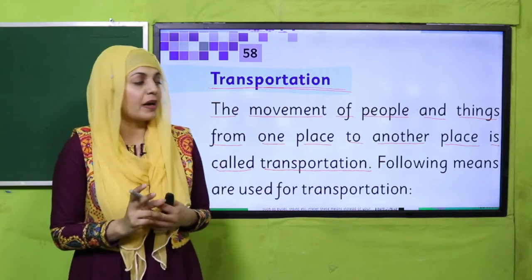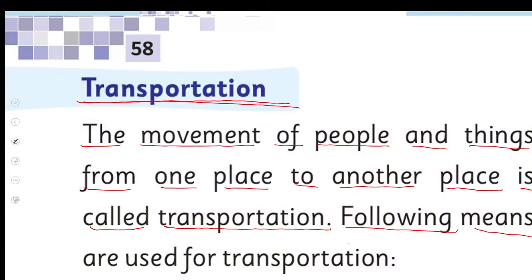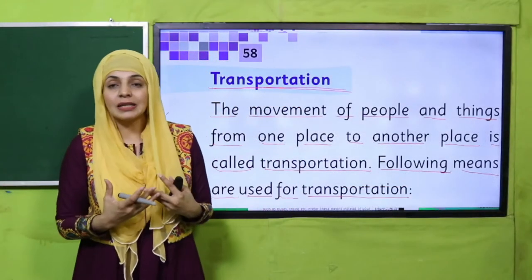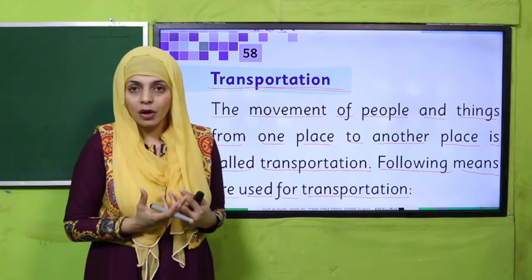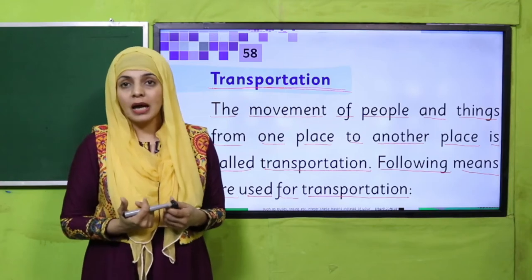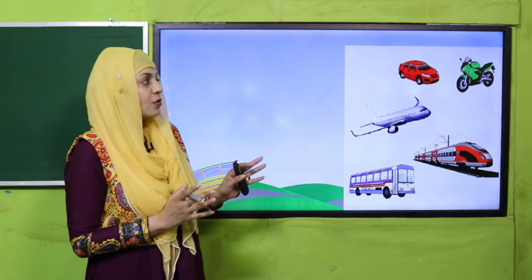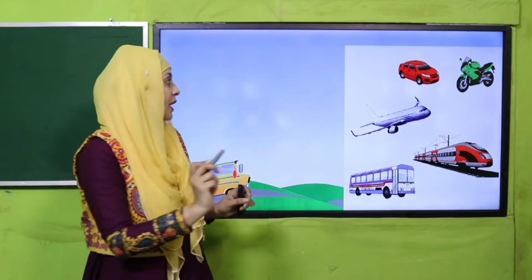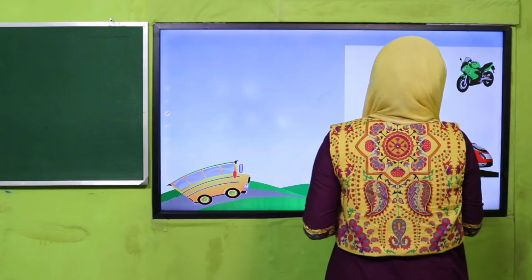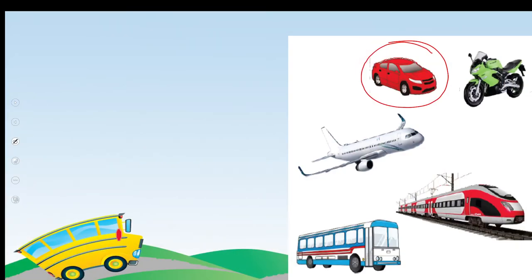Now I will show you different means of transportation again and you have to identify them along with me. Following means are used for transportation. The first one on your screen — quickly tell me what is this? A car — very good! How many wheels does it have? Four wheels, very good! What is this? This is a motorbike — very good! How many wheels? Two wheels — and where does it run? On the road, very good!